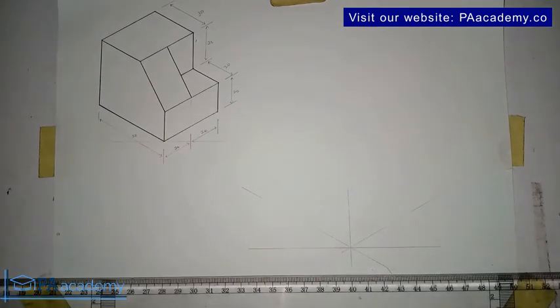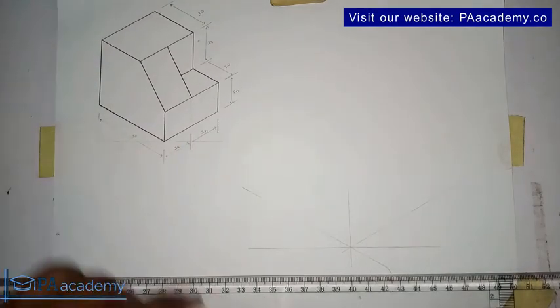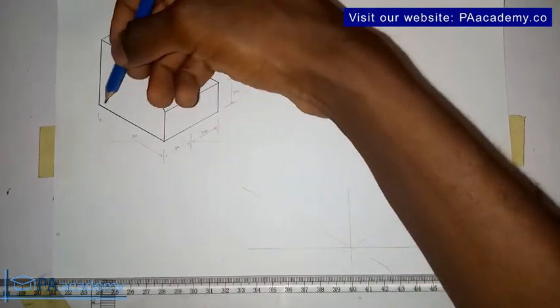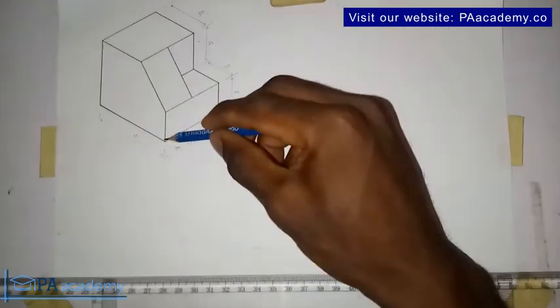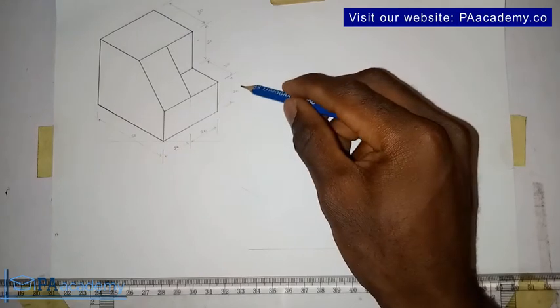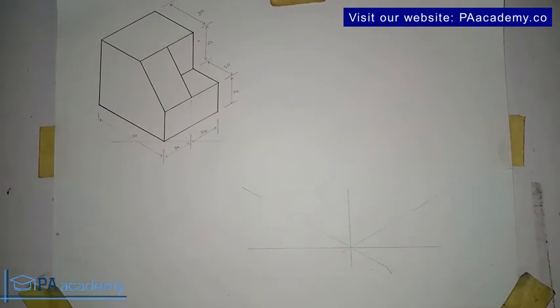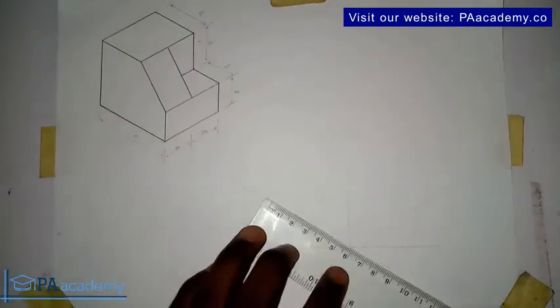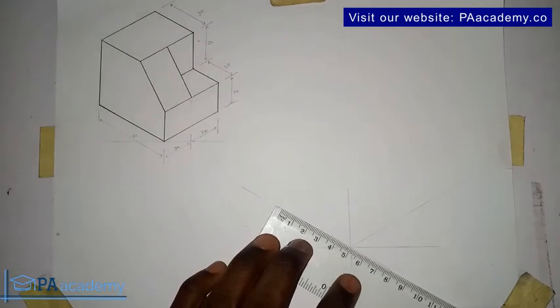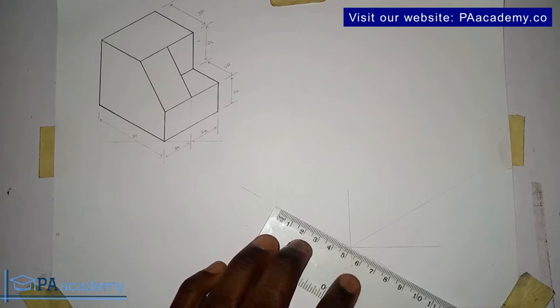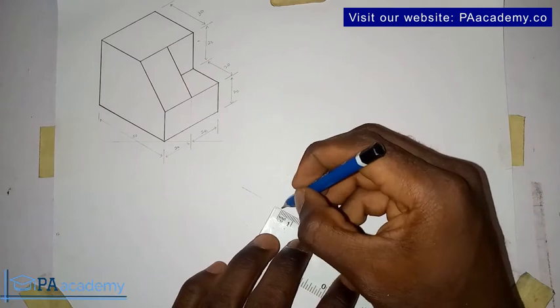Now let's take the measurements. So with what we are having here, from here to here is 50 millimeter, while from here to here is 20, as indicated here, while from here to here is 40. So let's take those. Let me measure those points. So here is 50 millimeter.